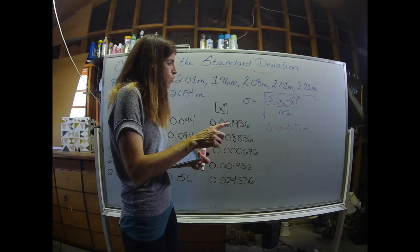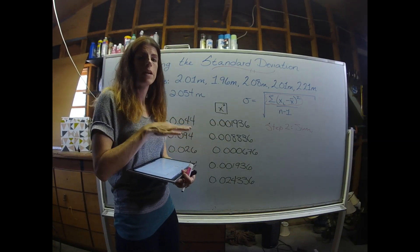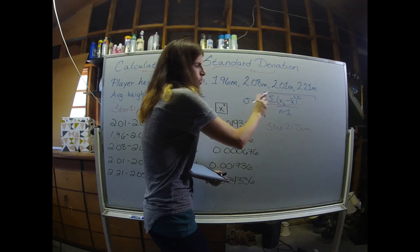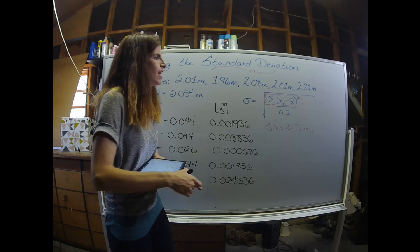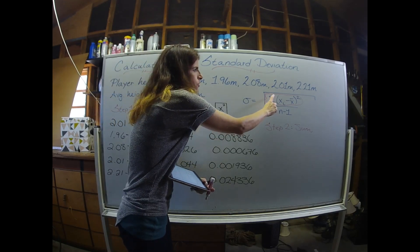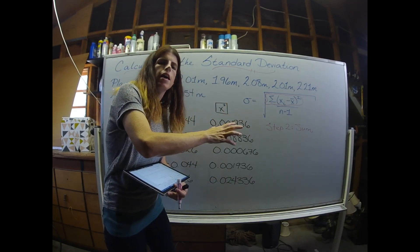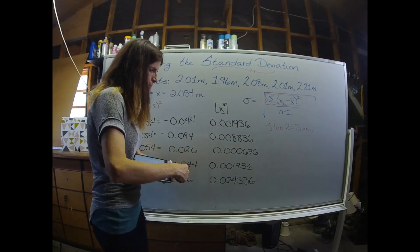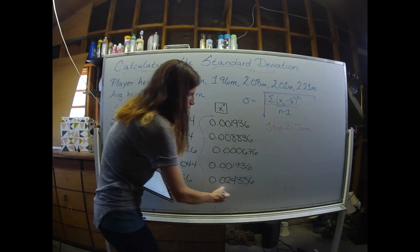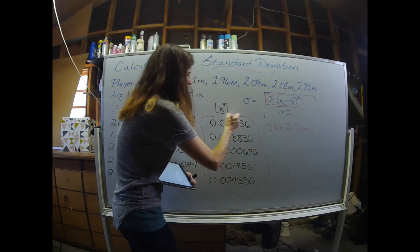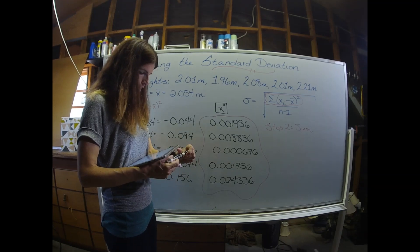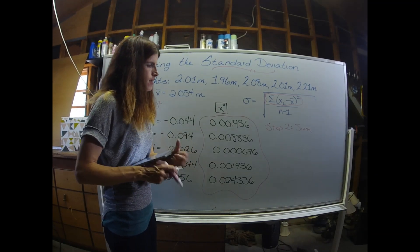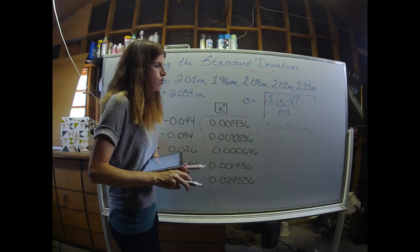The next thing that I need to do is add up all of my squared values. I'm working on this part right here that I circled in pink. This symbol is a capital sigma, and it means to add up or sum. So I am going to sum up all of these values, add them all up. And when I do that, I get a value of 0.03772.